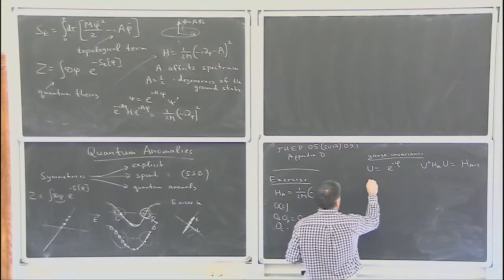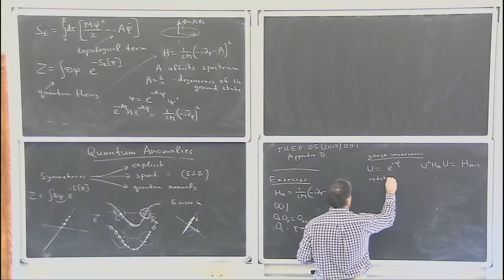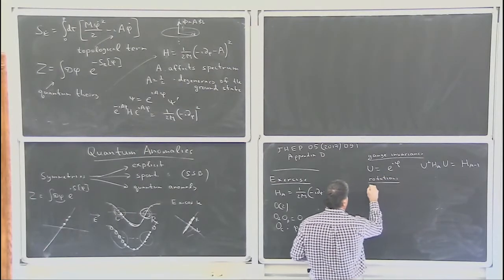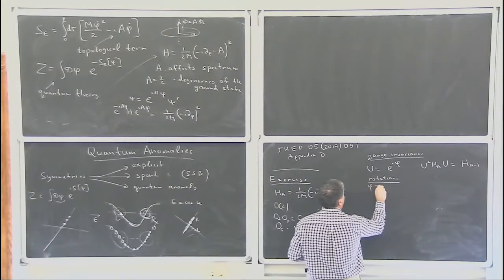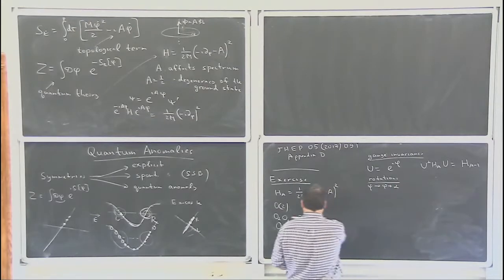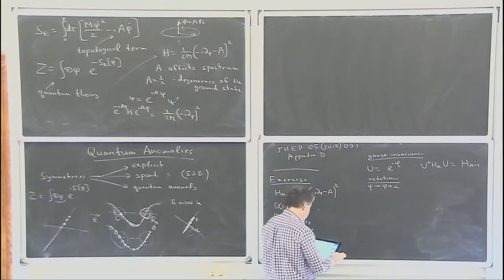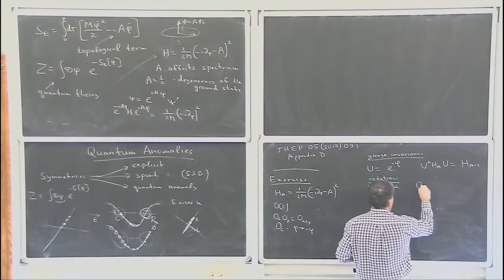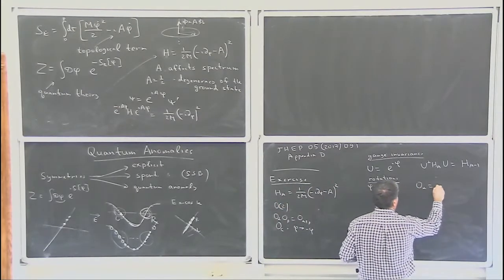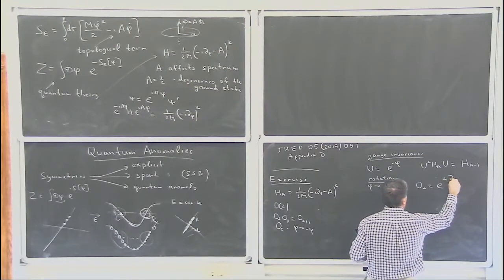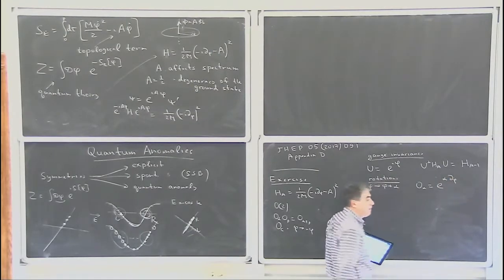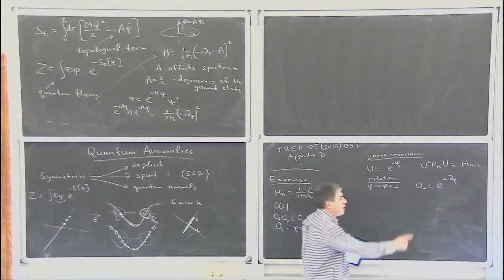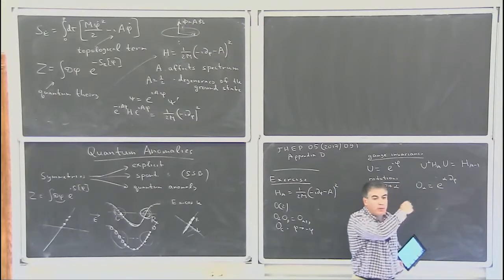The symmetries I want to see: first, gauge invariance, meaning I want to be able to shift A to A plus or minus one. The exercise is to show that if you take the operator U = e^(i phi), then U† H_A U gives H_{A-1}. This means the spectrum of H_A is the same as the spectrum of H_{A-1}, and all observables are related by this unitary transformation.